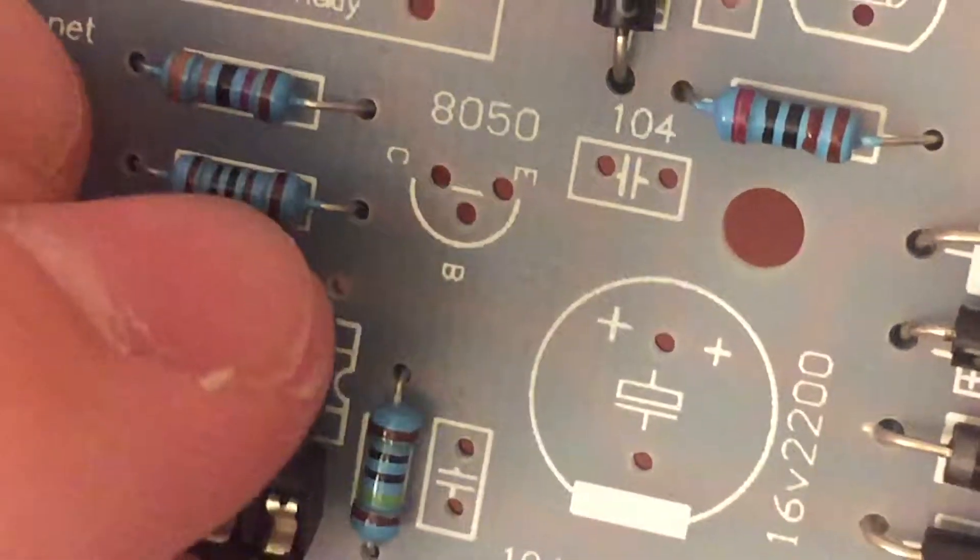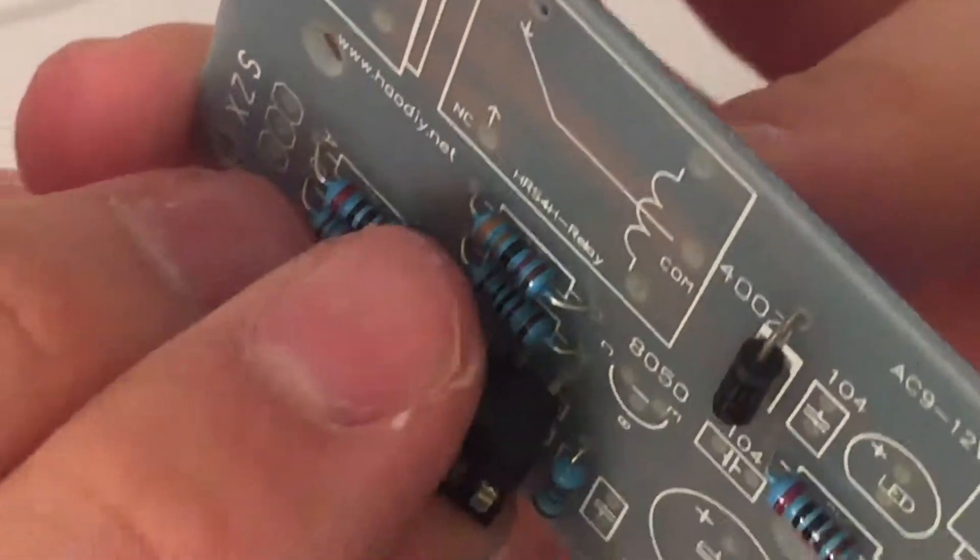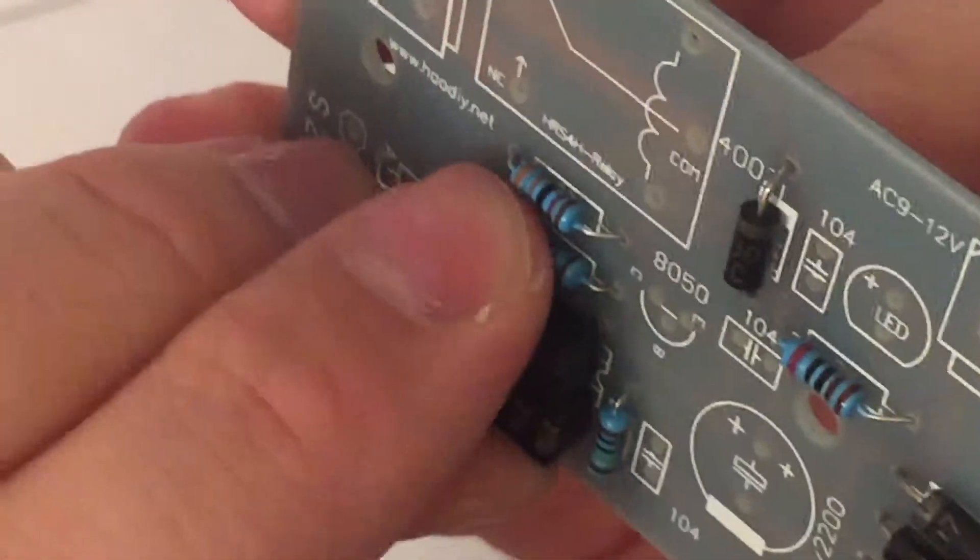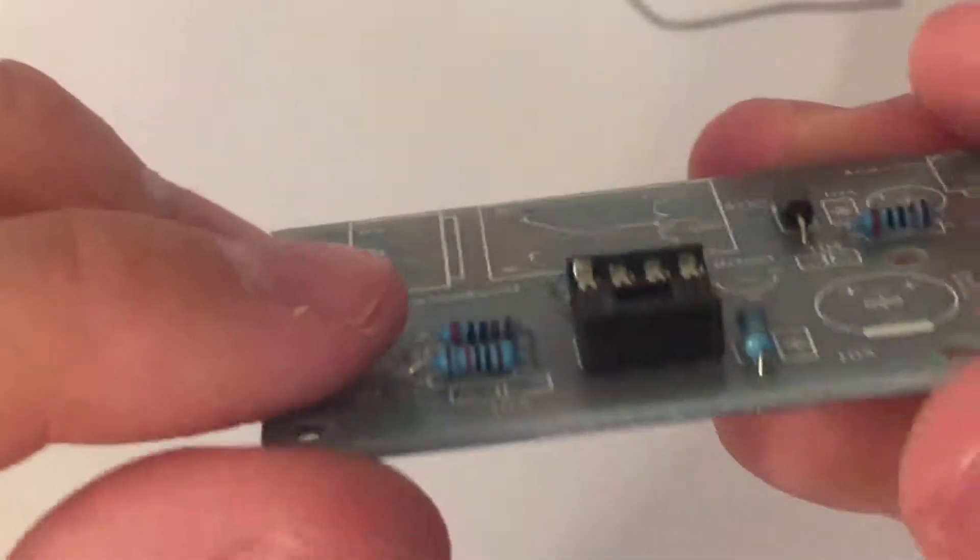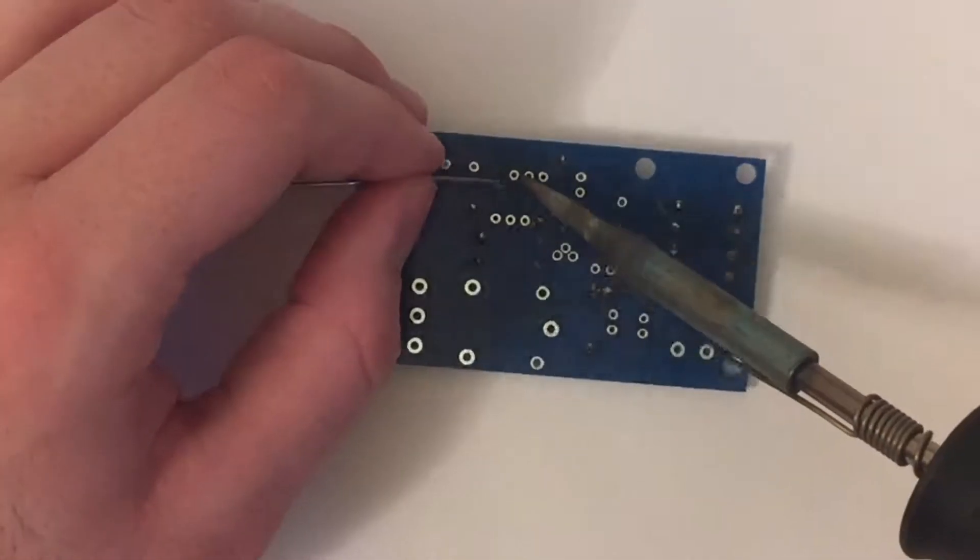As you can see the pins on this part got bent during shipment so it's not possible to insert it right away. Just straighten the pins with your fingers and it should fit right in. Pin down one edge of the socket. Check the alignment of the part and if you are happy with it add solder to all other pins.